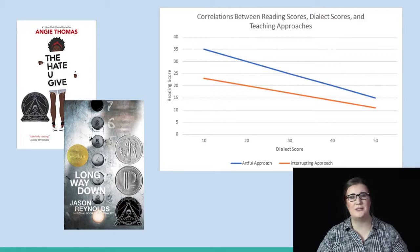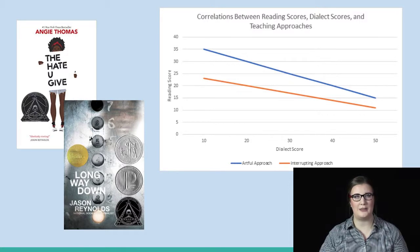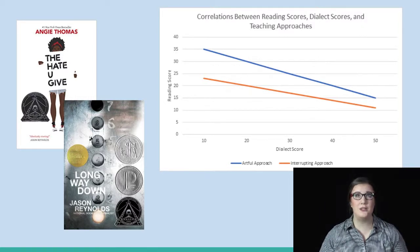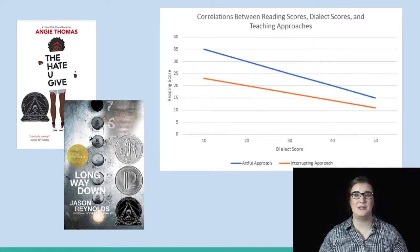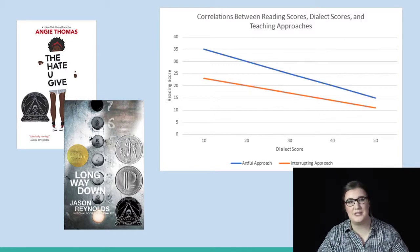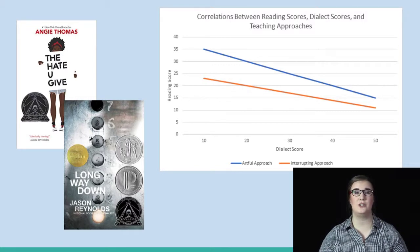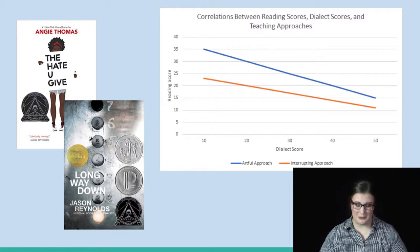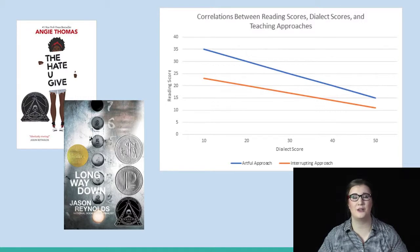You'll see on your screen a graph resulting from one of those studies that talks about the use of two teaching approaches in the English classroom. One is the artful approach, which allows English vernaculars a place in the classroom and allows the teacher to speak the dialect or use patterns familiar to students. The interrupting approach is when a teacher chooses to interrupt or correct a student immediately. The blue line, representing the artful approach, is much higher than the orange line, representing much higher student reading scores when teachers engage students using their vernacular.